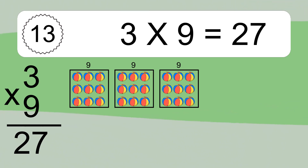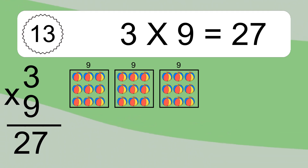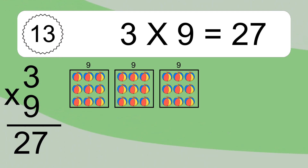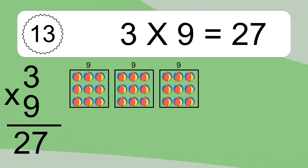We have 3 boxes, and each box has 9 colorful balls inside. If you count all the balls in all the boxes together, you will have 3 times 9 balls. This equals 27 balls.